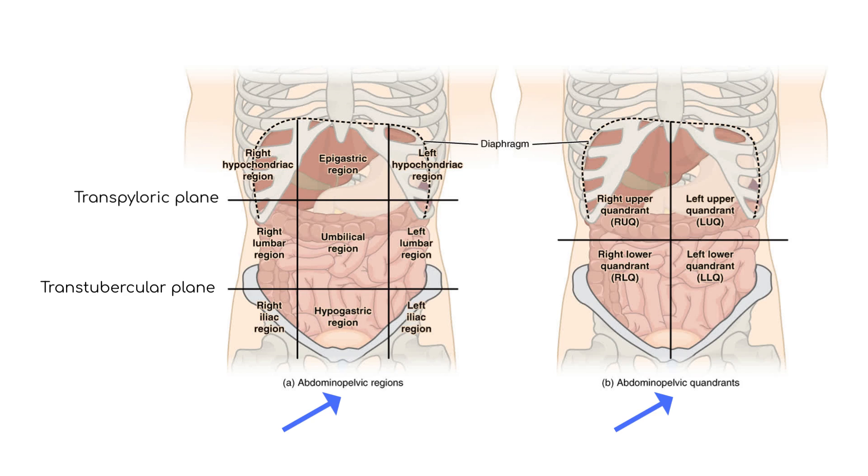The three superior regions are the epigastric and right and left hypochondriac. The middle regions are the umbilical and right and left lumbar. The lower regions are the hypogastric and right and left iliac or inguinal.